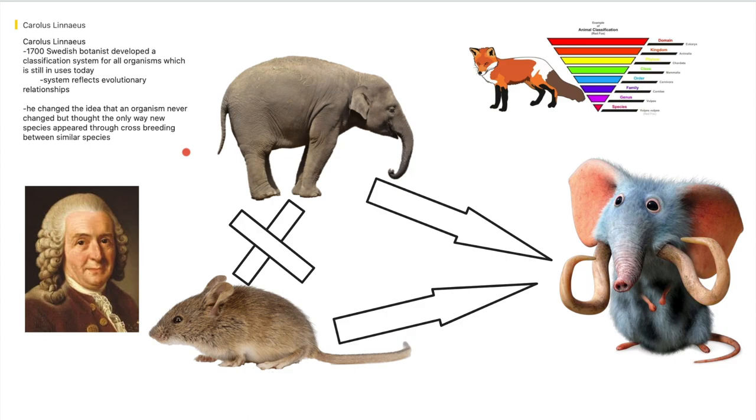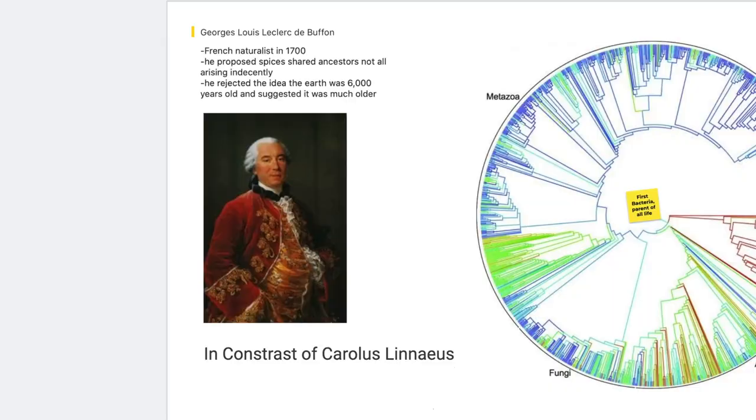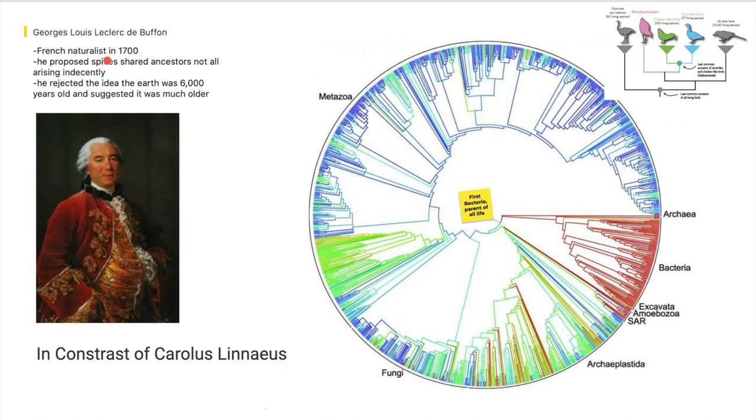He changed the idea that organisms never change, but thought the only way new species appeared were through crossbreeding similar species. Of course, it wouldn't be like an elephant and a mouse breeding together, they would make a mouse baby elephant thing. Next page, we go to George Louis de Buffon.